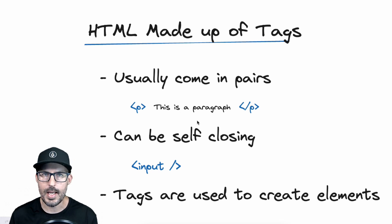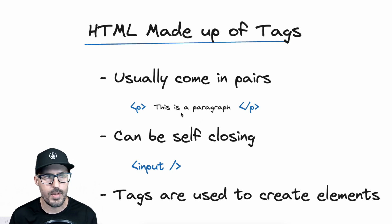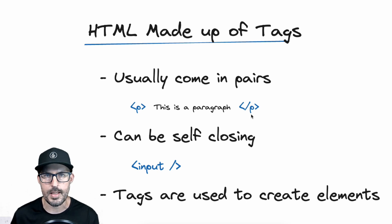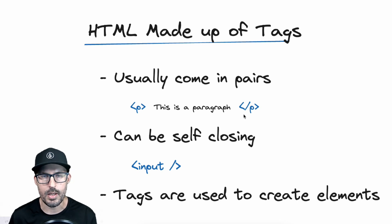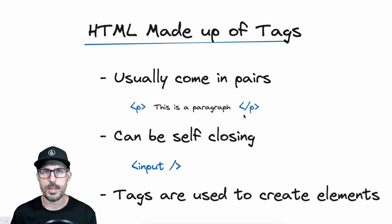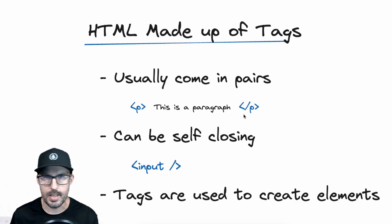Any tag that can have content inside of it — whether that's text or other elements — is going to need a closing tag, so the browser knows where that content ends. Now, HTML tags can also be self-closing, which essentially means they don't contain any content. The tag itself is just a tag used to render something onto the screen, but it doesn't have anything inside of it — no text, no other elements.